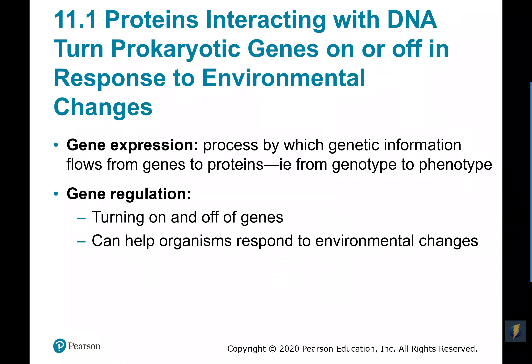When we talk about gene expression, we're talking about that flow of information discussed in Chapter 10, whereby we take the genetic information encoded in our DNA, first turn it into messenger RNA, and then build a protein from that instruction. Essentially, we're going from our genotype to our phenotype, flowing that information in that direction.